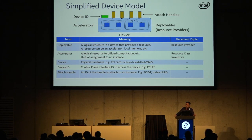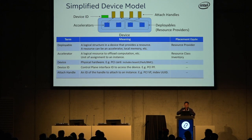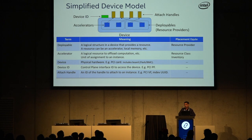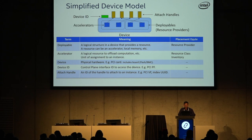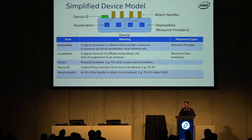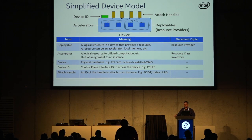Here's a simplified device model. The idea is that you've got a device, and within a device you may have several subcomponents. In the case of a GPU it could be just a single component, but an FPGA could be divided into multiple regions — each configurable separately and containing a separate accelerator. In fact, one region may even contain multiple accelerators. Our definition of an accelerator is a unit of offload which can be independently assigned to a VM. So a single GPU device can contain multiple vGPUs, and each vGPU can be assigned to a different VM — that would be an example of an accelerator.